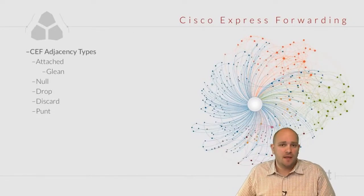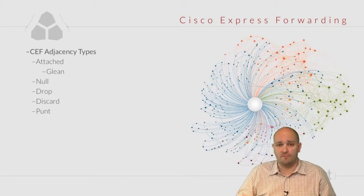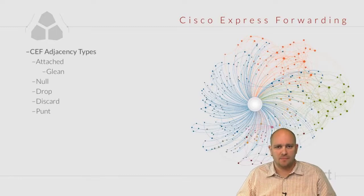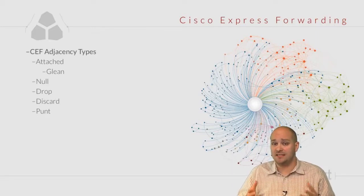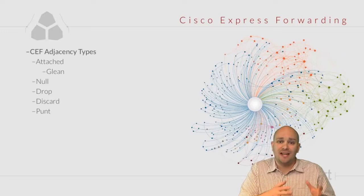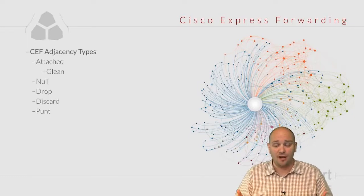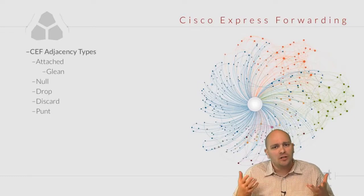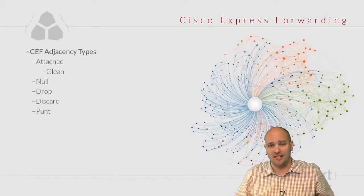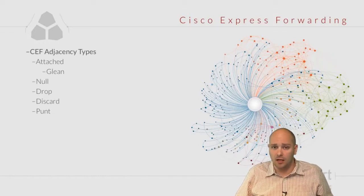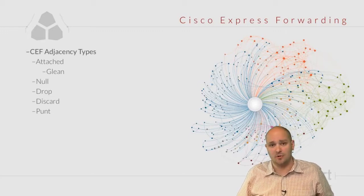The attached adjacency is not the only adjacency type CEF recognizes. Another important type is the Glean adjacency. Glean adjacency is in most cases an attached adjacency for which we are missing some piece of information — a transient state when we need to send a packet toward a destination, we have the route, so we have an attached adjacency, but we don't have an ARP entry for the specific host we're trying to reach.